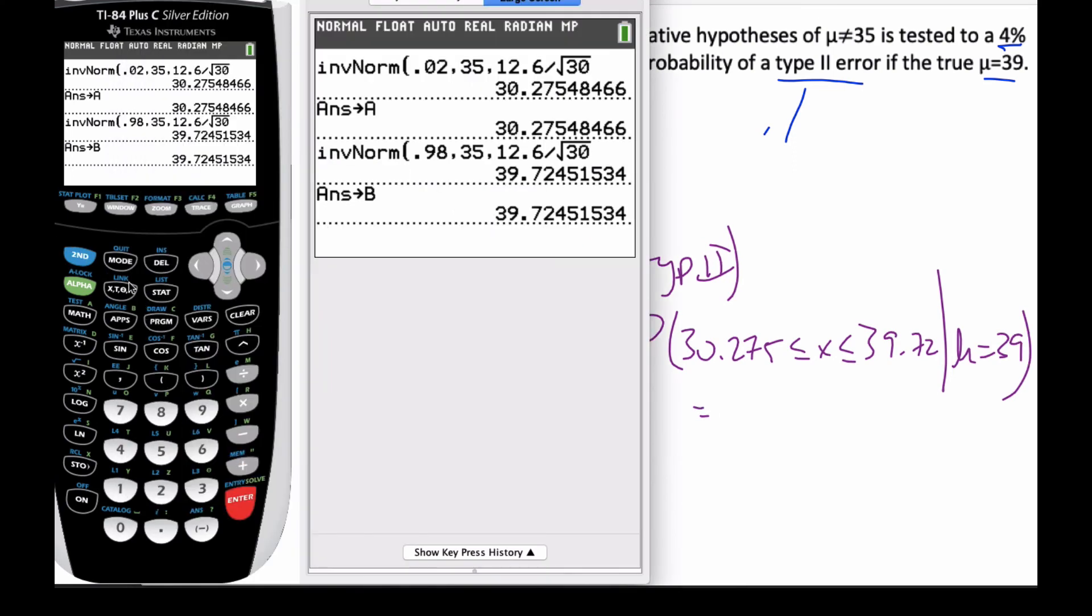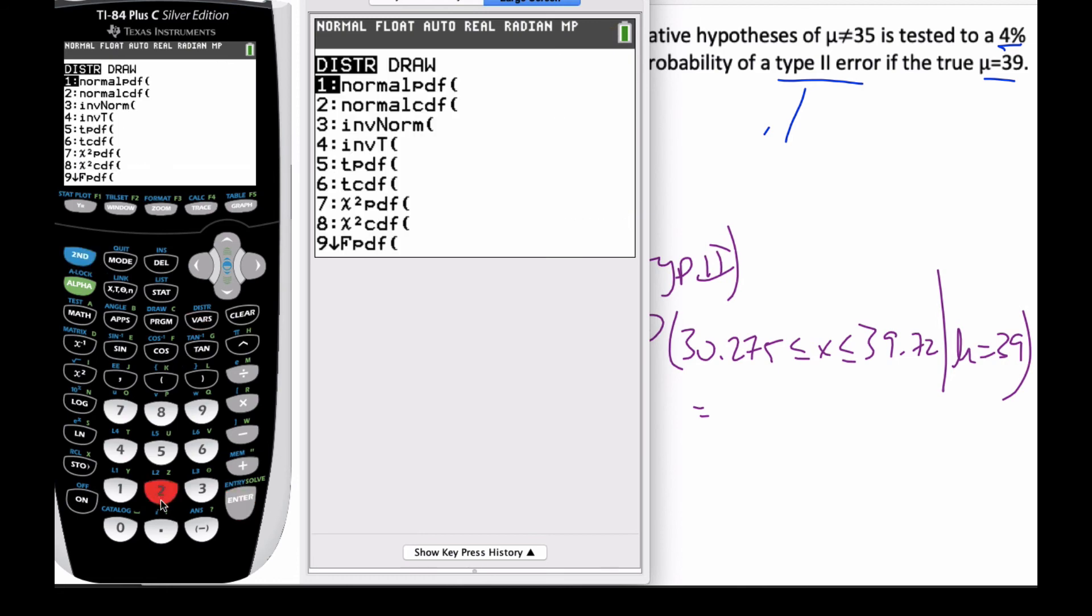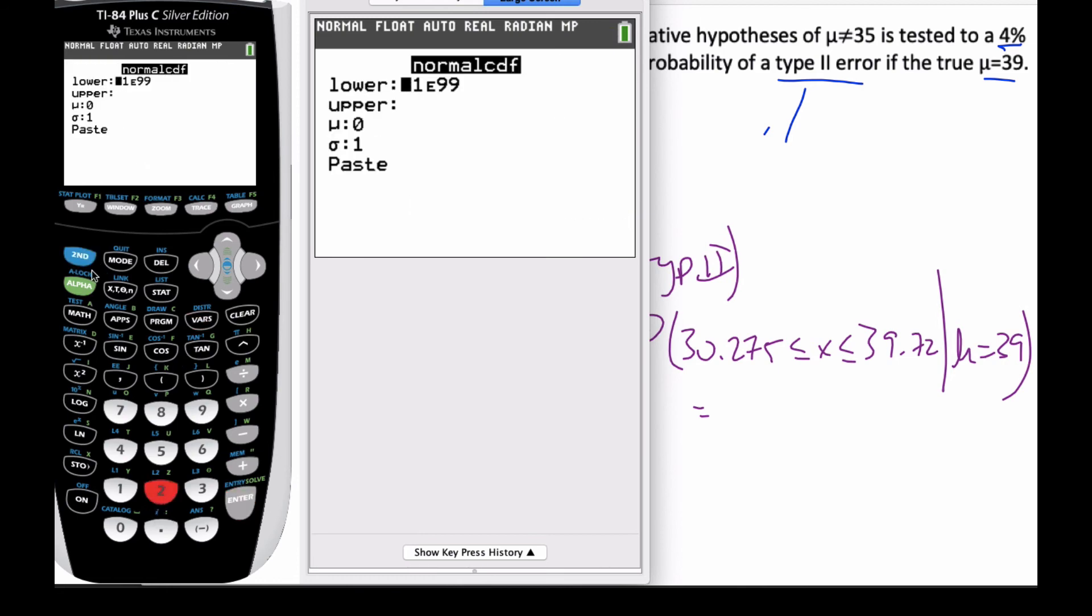I can go to my calculator and go to distributions, normal CDF. I want to add them all up. I'm going to go from alpha A to alpha B, which is my 30 to my 39. My mean is 39 now. This is still 12.6 divided by the square root of 30.